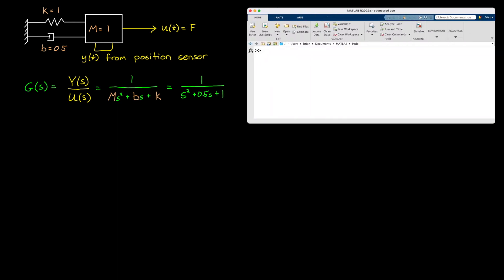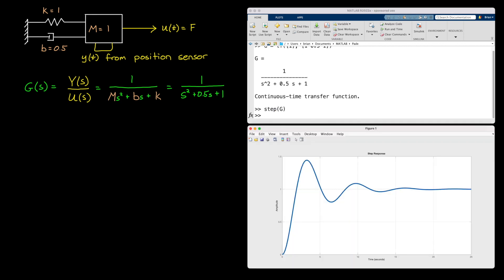Let's create this transfer function in MATLAB using the tf command, and then we'll plot the step response. The step command applied a force of 1 newton at time equals 0 seconds, and then this plot shows the position of the mass over time. We can see that the mass started moving right at 0 seconds, and then ultimately was offset by a distance of 1 meter. But the important thing that I want to point out is that the measured position of the mass starts to move the instant force is applied. There is no delay in this model.